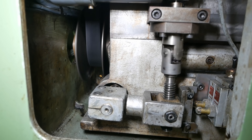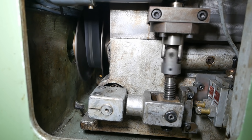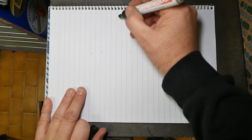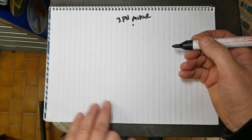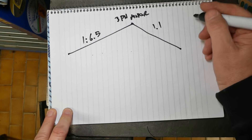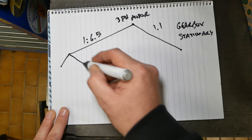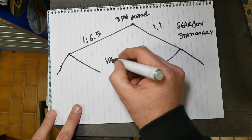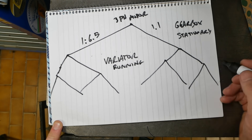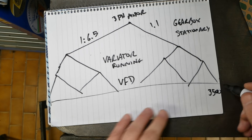You can only move the variator when the spindle is actually turning — it's very bad for it to force the variator against a stationary belt. At this point I haven't thought through the software to actually control the spindle. I've got a three-phase motor running at a single speed, a gearbox giving two different speeds — 1-to-6.5 or 1-to-1 — which has to be switched when stationary. Next up I've got the variator, which has a pretty wide speed range but can only be switched when running. And then finally I've got the VFD.